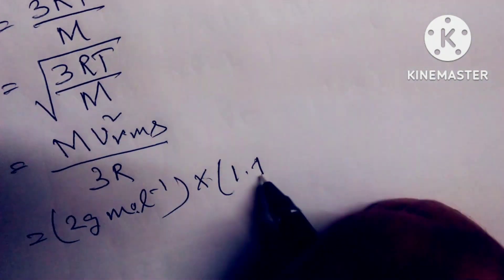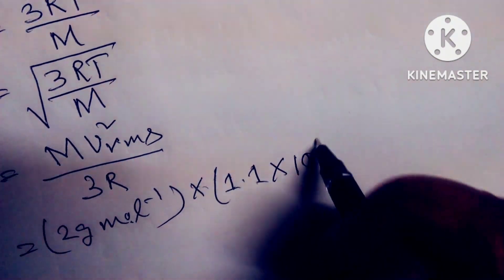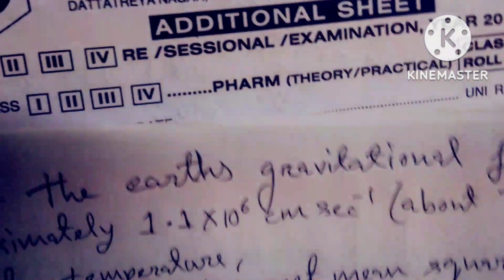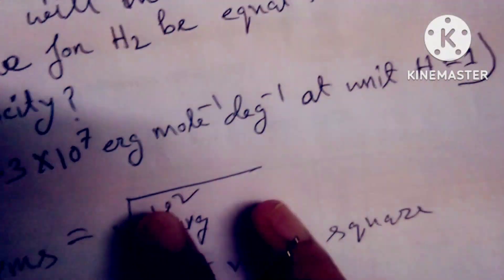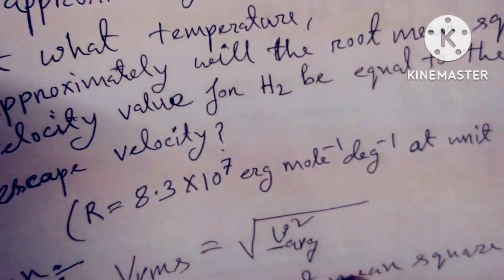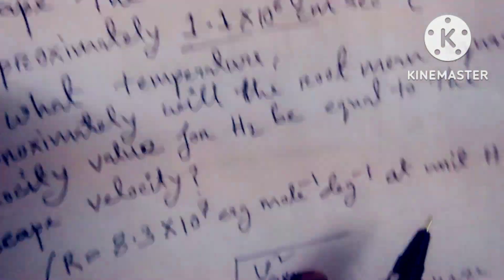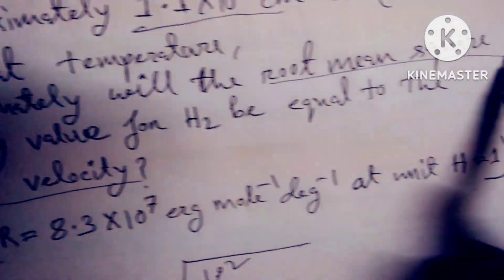Because the escape velocity and root mean square velocity are equal. So it is 1.1×10⁶ squared. You can check the problem - the escape velocity equals the root mean square velocity of hydrogen.